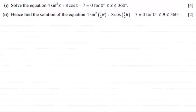Hi. Now for this question, we're asked to, first of all, solve the equation 4 sine squared x plus 8 cos x minus 7 equals 0, for x being greater than or equal to 0 degrees but less than or equal to 360 degrees, for 4 marks.